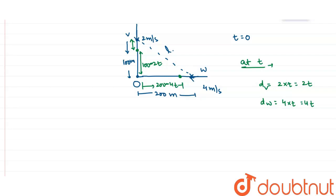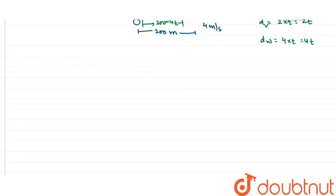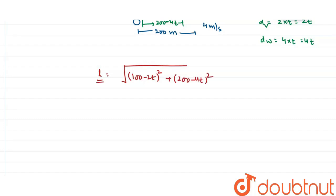We calculate L using the Pythagorean theorem. L equals the square root of the sum of squares of both distances: L = √[(100 − 2t)² + (200 − 4t)²]. Now we have to calculate the minimum value of this expression.